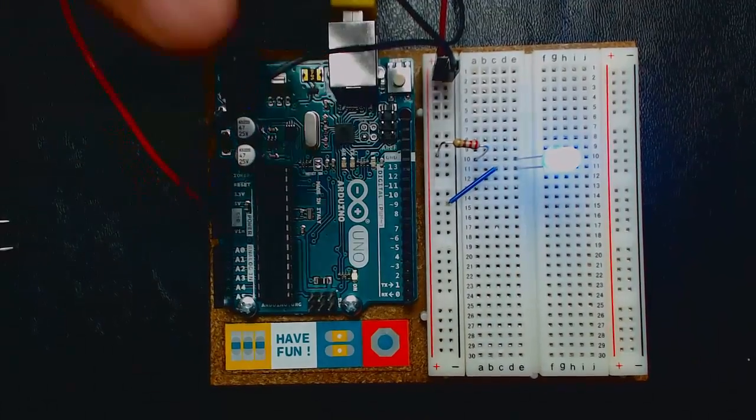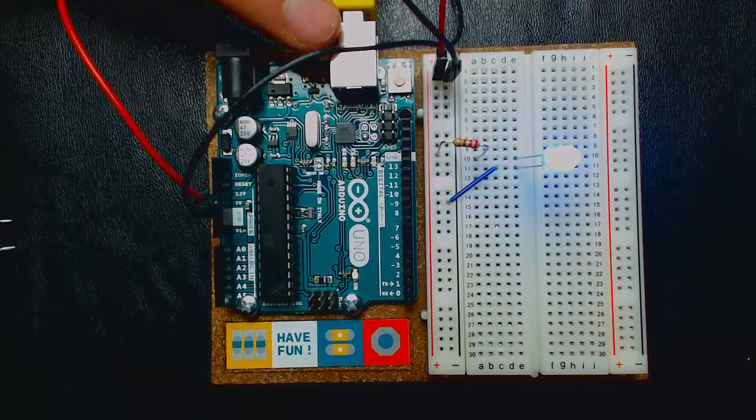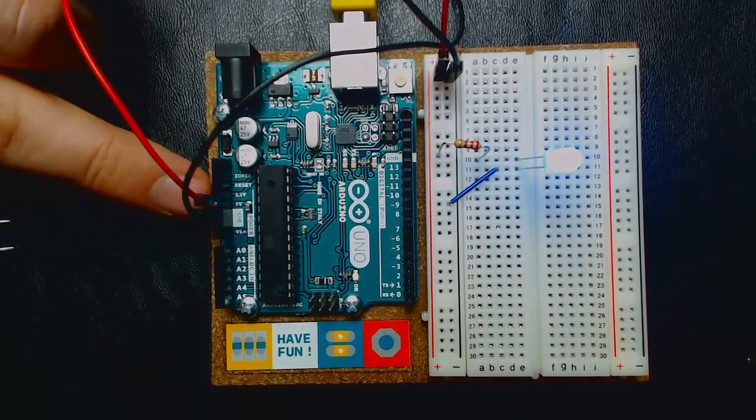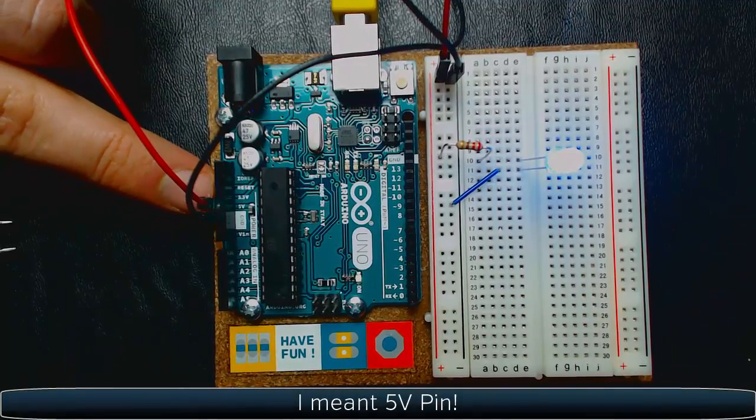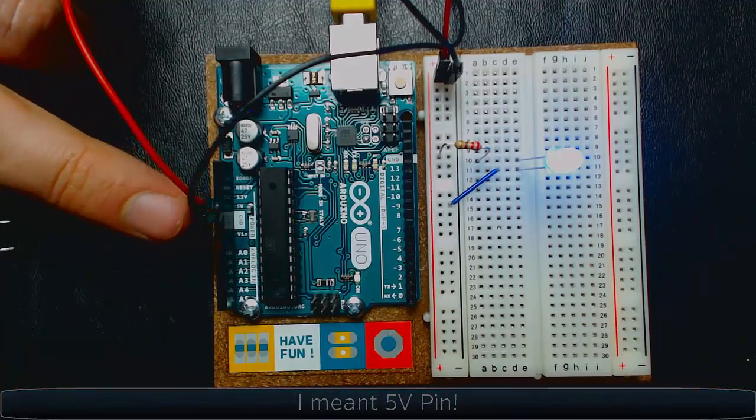So, right now, once you apply power to the board through the USB cable, then, power immediately starts flowing to the five volts rail. And, the ground, of course, is connected to ground. In order to make a whole circuit, you'll have to go all the way from voltage to ground.